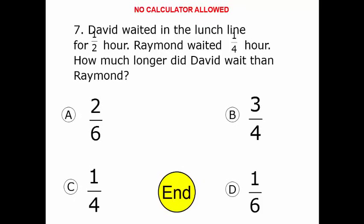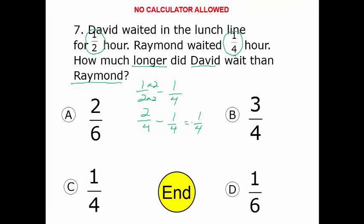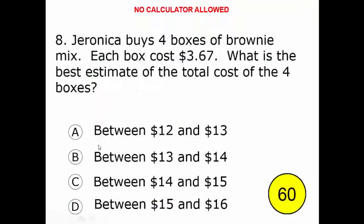David waited in lunch line for one-half an hour. Raymond waited for a quarter hour. How much longer did David wait than Raymond? We need to subtract Raymond's time of one-quarter hour from David's time of one-half hour. We need the same denominator, so if I take one-half times two over two, I end up getting two-quarters minus one-quarter, giving me one-quarter of an hour. David waited one-quarter of an hour longer — choice C.